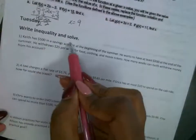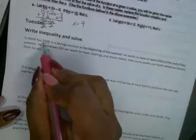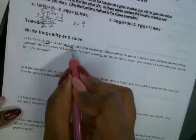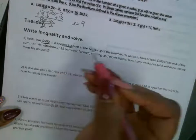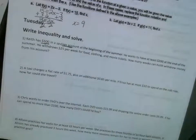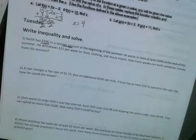All right, so here you're writing the inequality and we solve it. It says, Keith has $500 in his savings account. That's how much he has. So that's the starting amount. You have automatically $500 in his savings account.